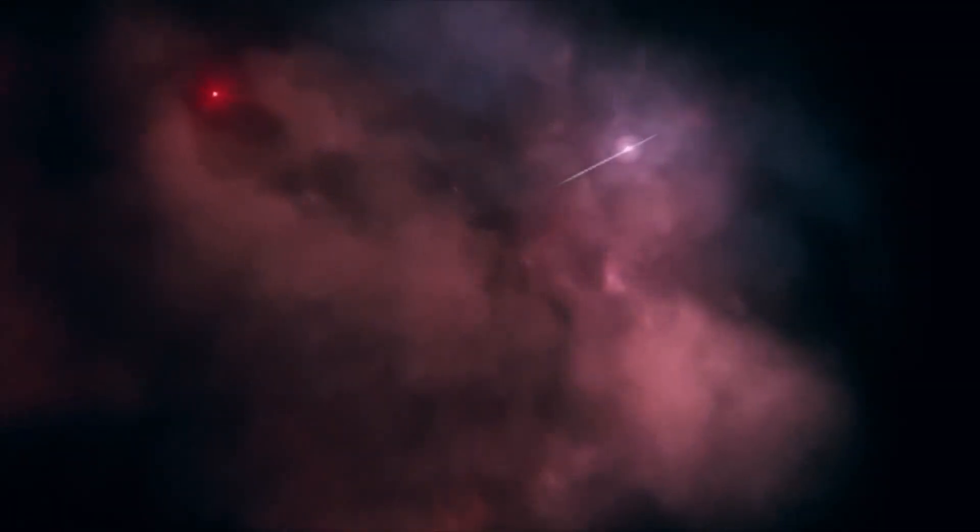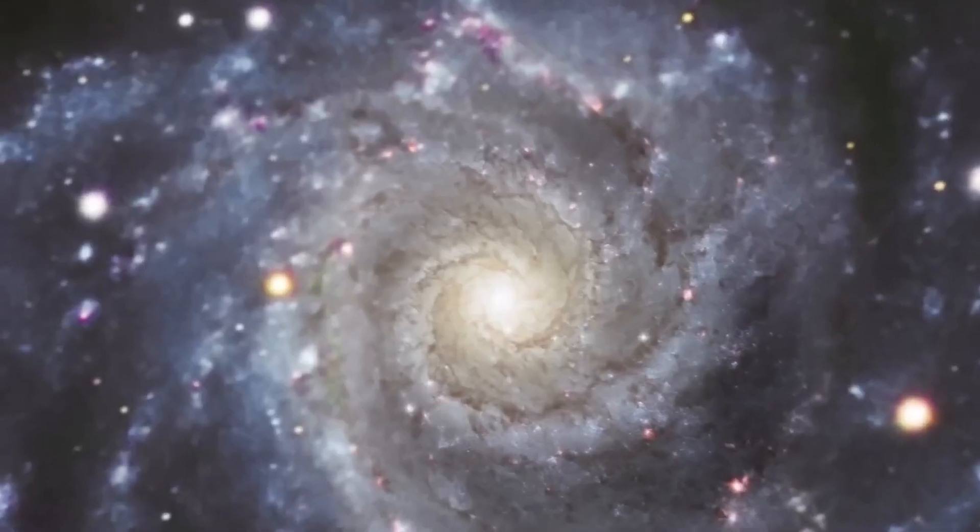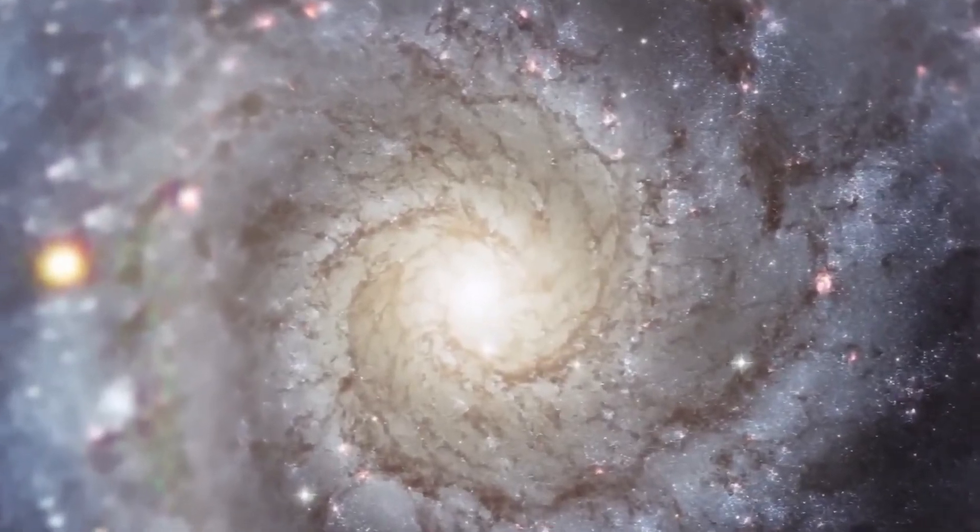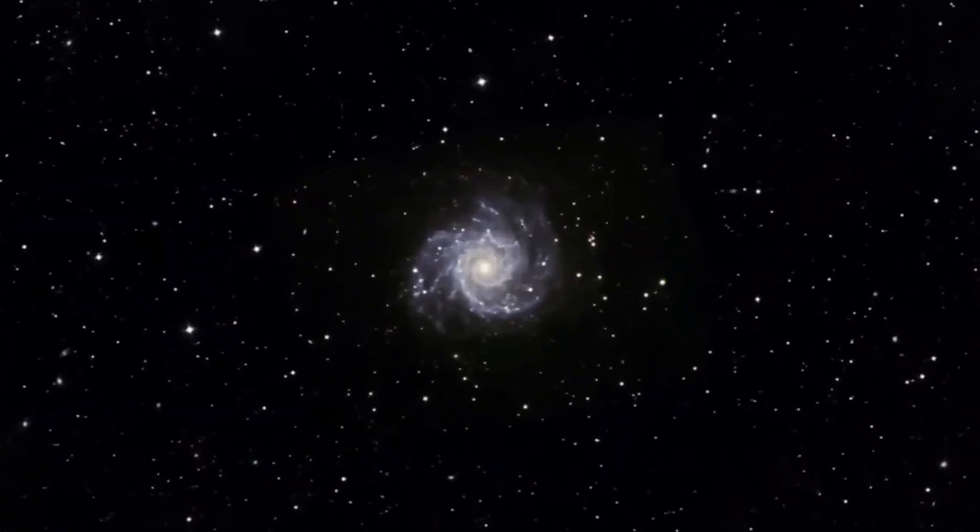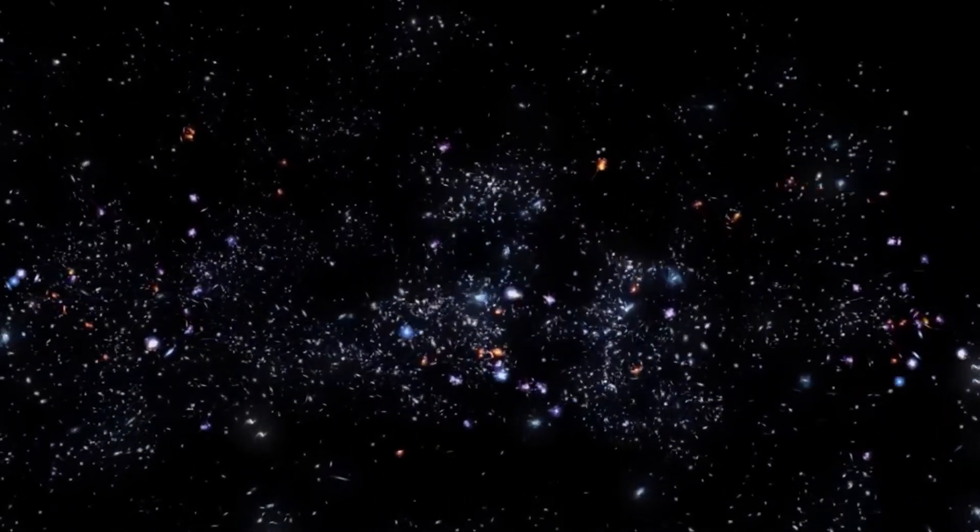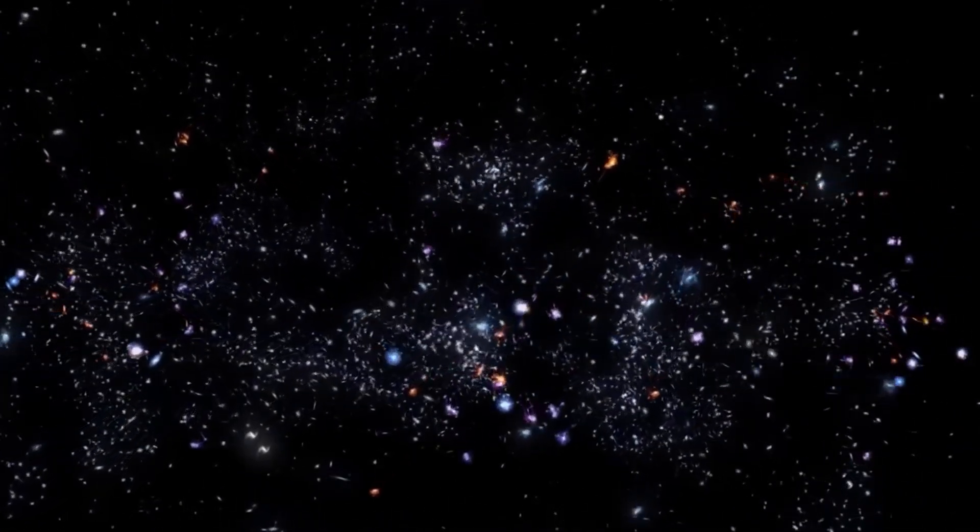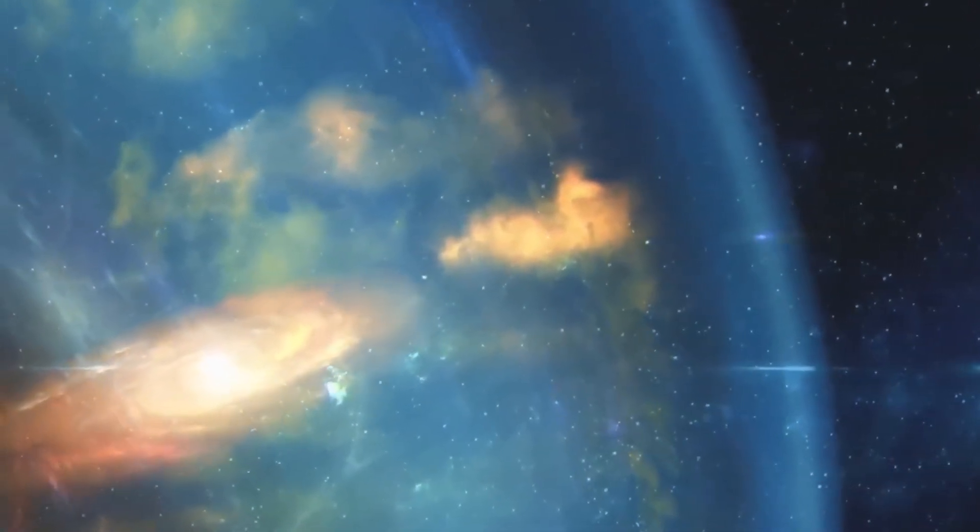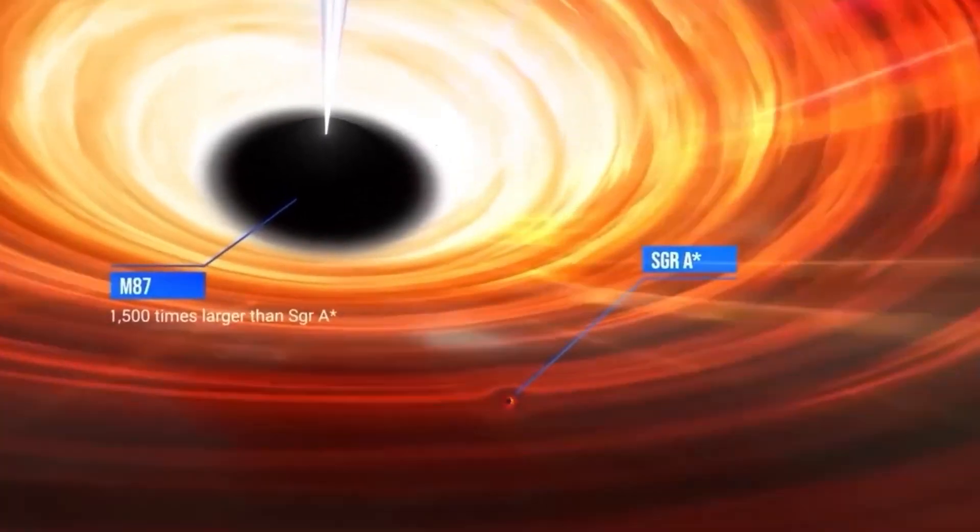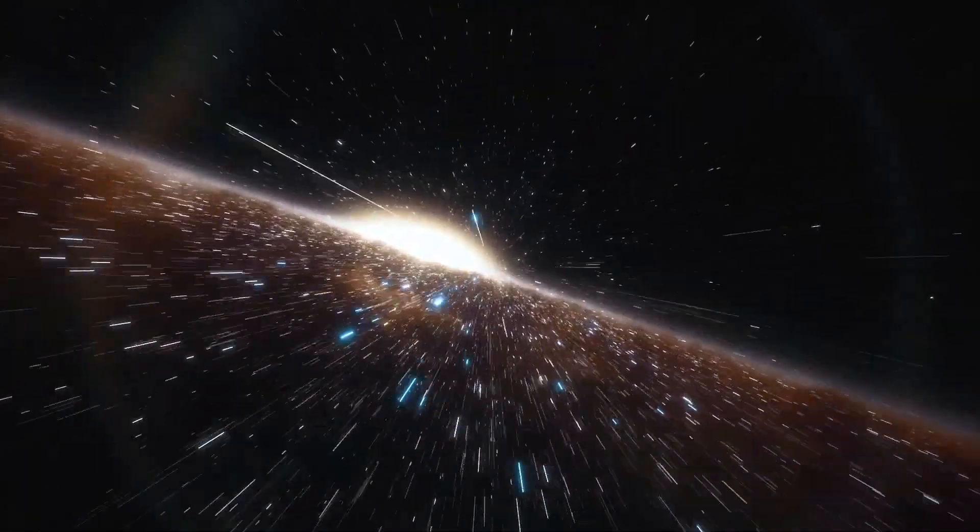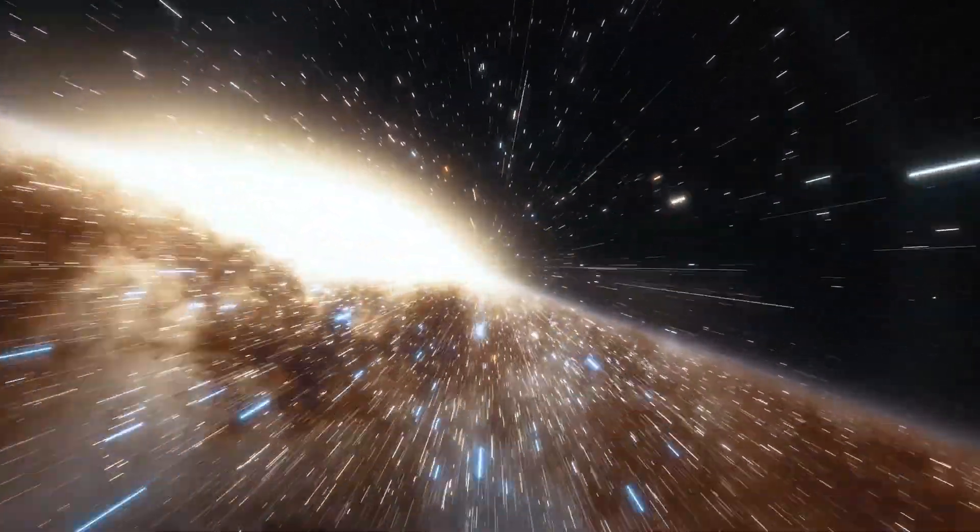The two galaxy clusters that comprise Abel 3667 collided roughly a billion years ago, essentially exploding it into existence at that time. A colossal amount of energy is unleashed when two galaxy clusters unite. This is because galaxy clusters are among the universe's most massive, gravitationally bound structures. According to researchers, the highest single energy discharge since the Big Bang occurred during this event.